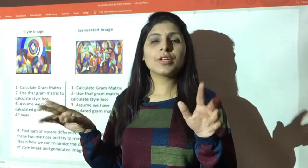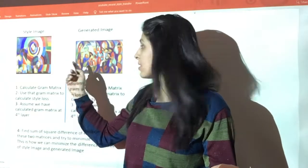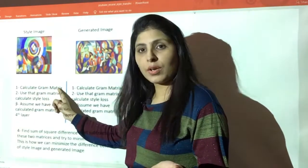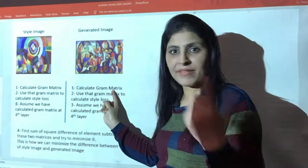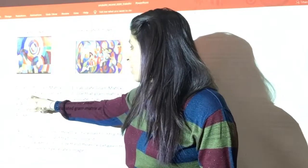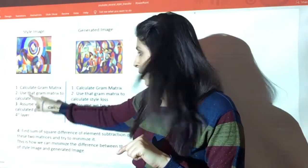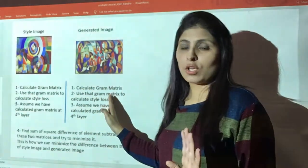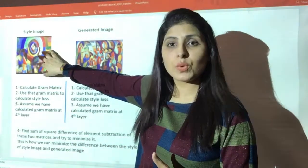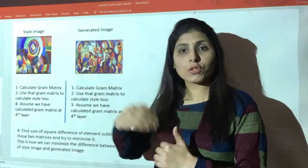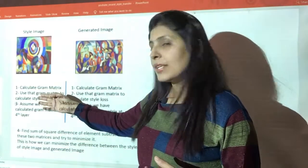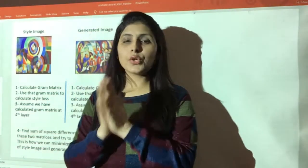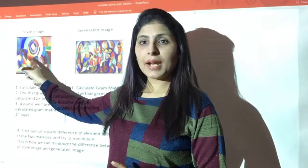Going back to our style transfer scenario: for the generated image and the style image, we first calculate the gram matrix for each image separately. Then we use those gram matrices to calculate the style loss. Both images will have their own channels, and we calculate the gram matrix and use it to find the style loss between them.